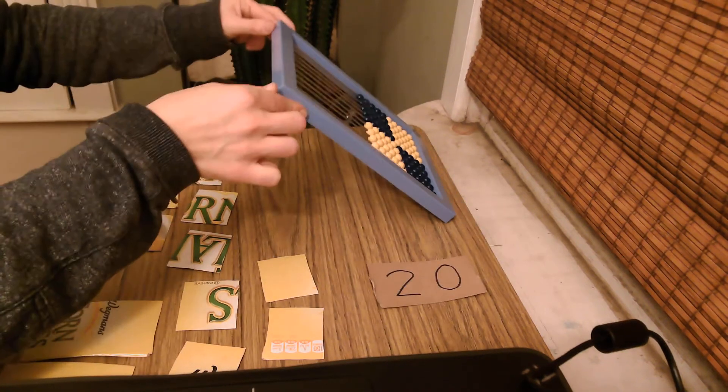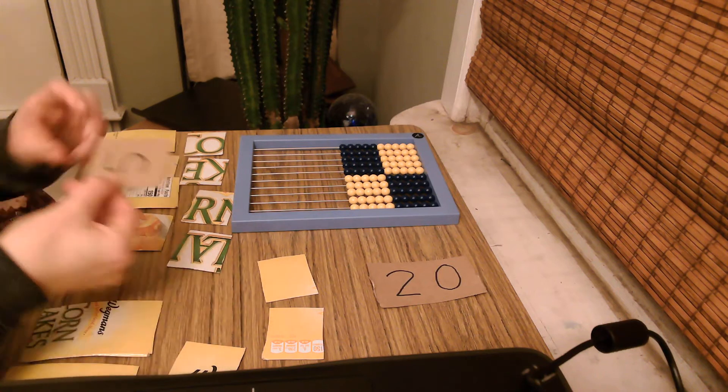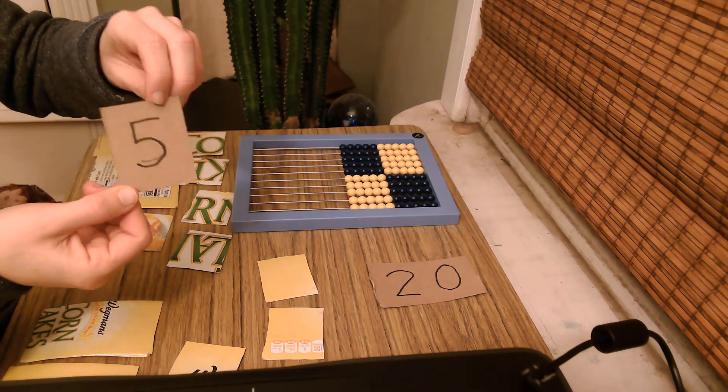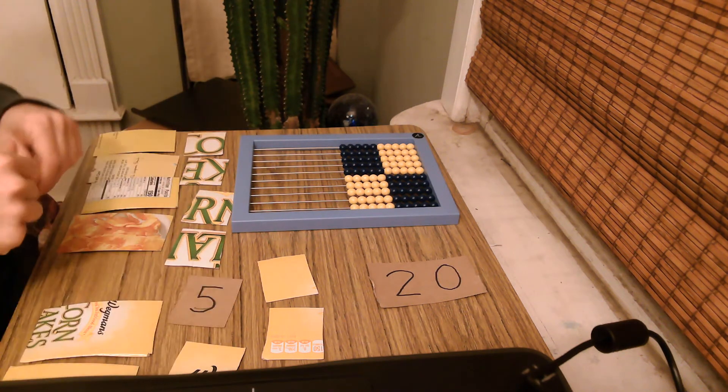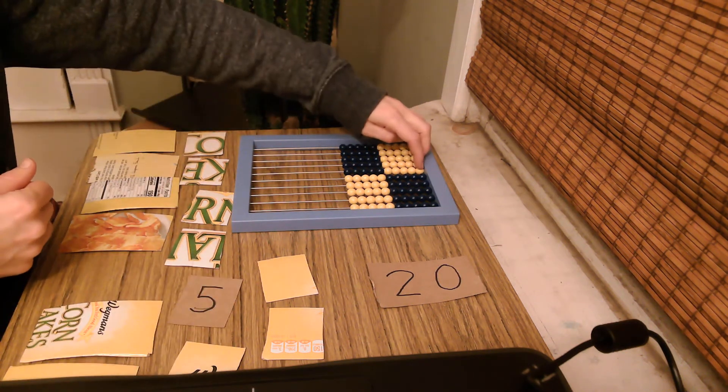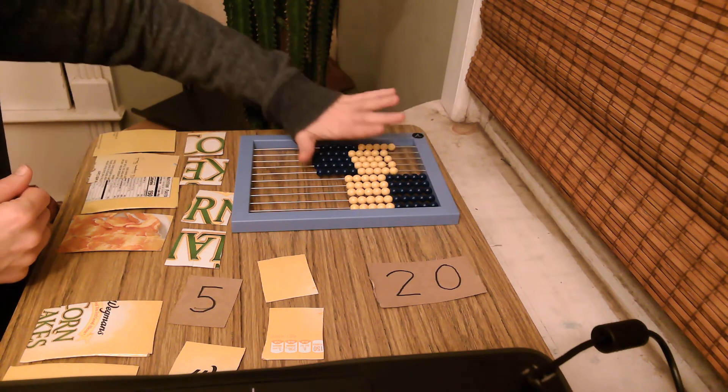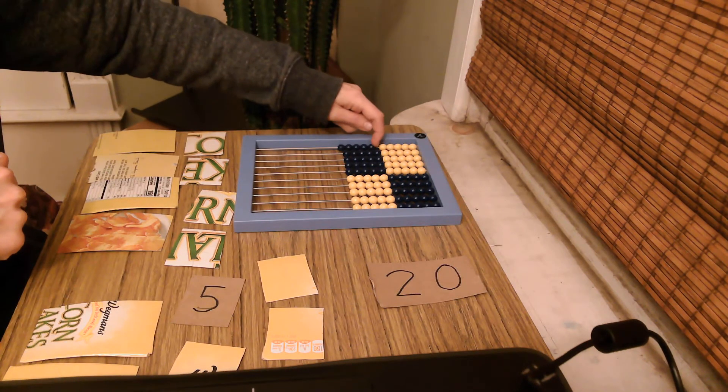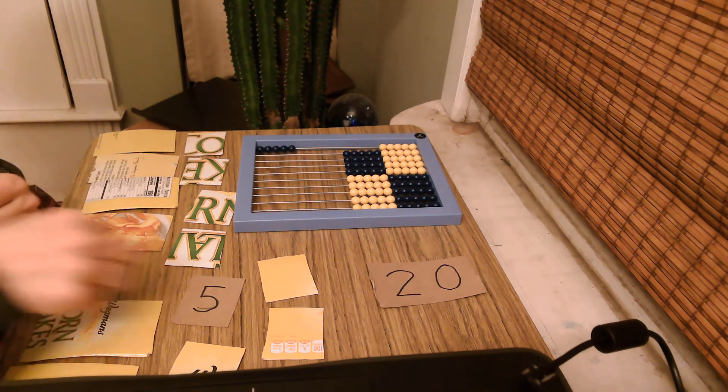Okay, then we clear it and we'll do another one. I'll pick a ones card. Five. So, if I want to make five on the abacus, is that five rows like that? Is that five? No, that's five tens. We want just five ones. I know it's all the blue beads.